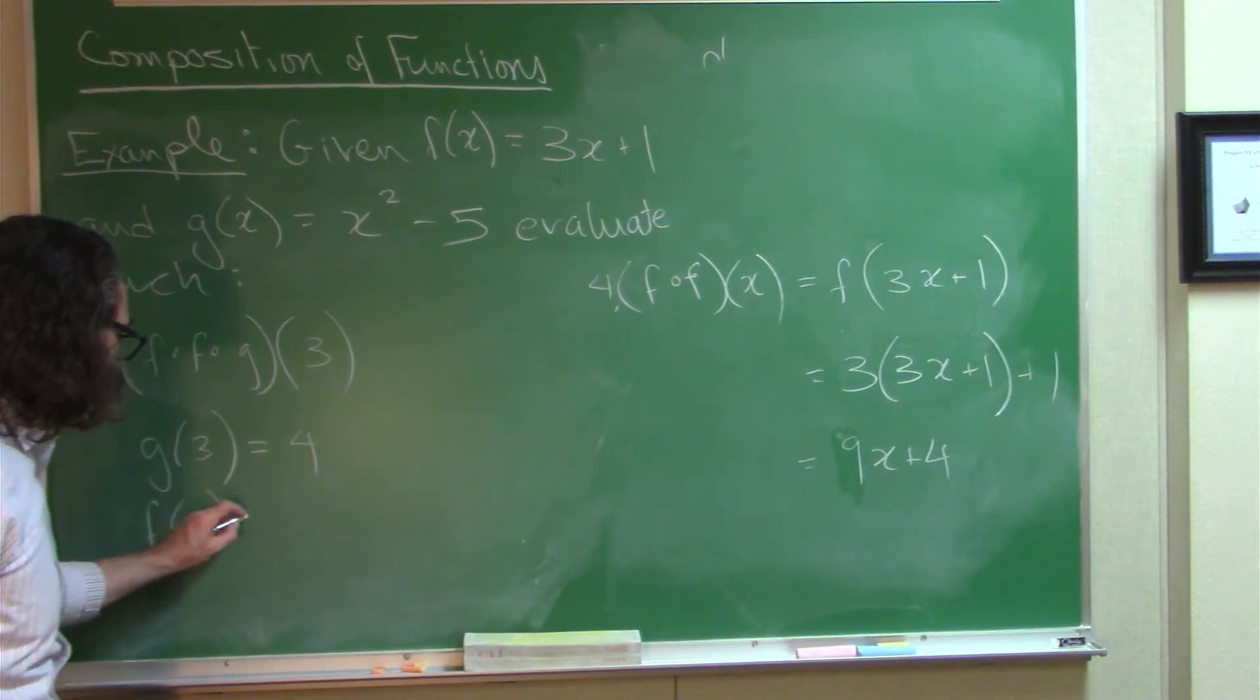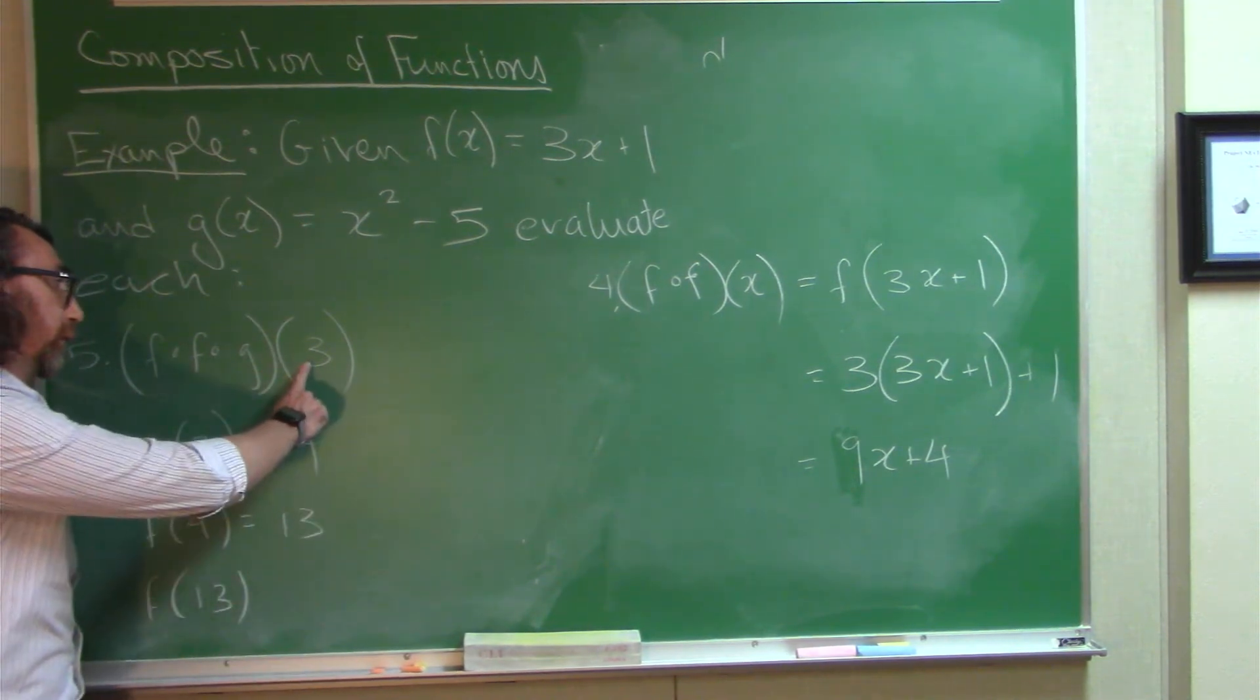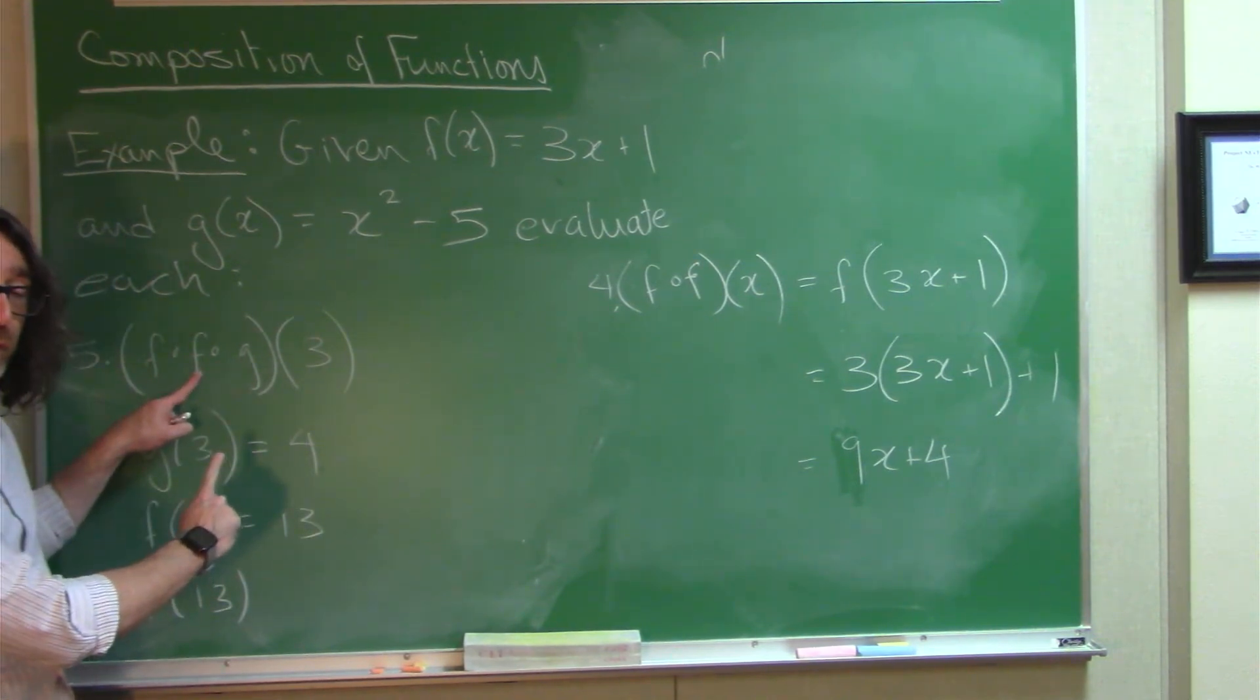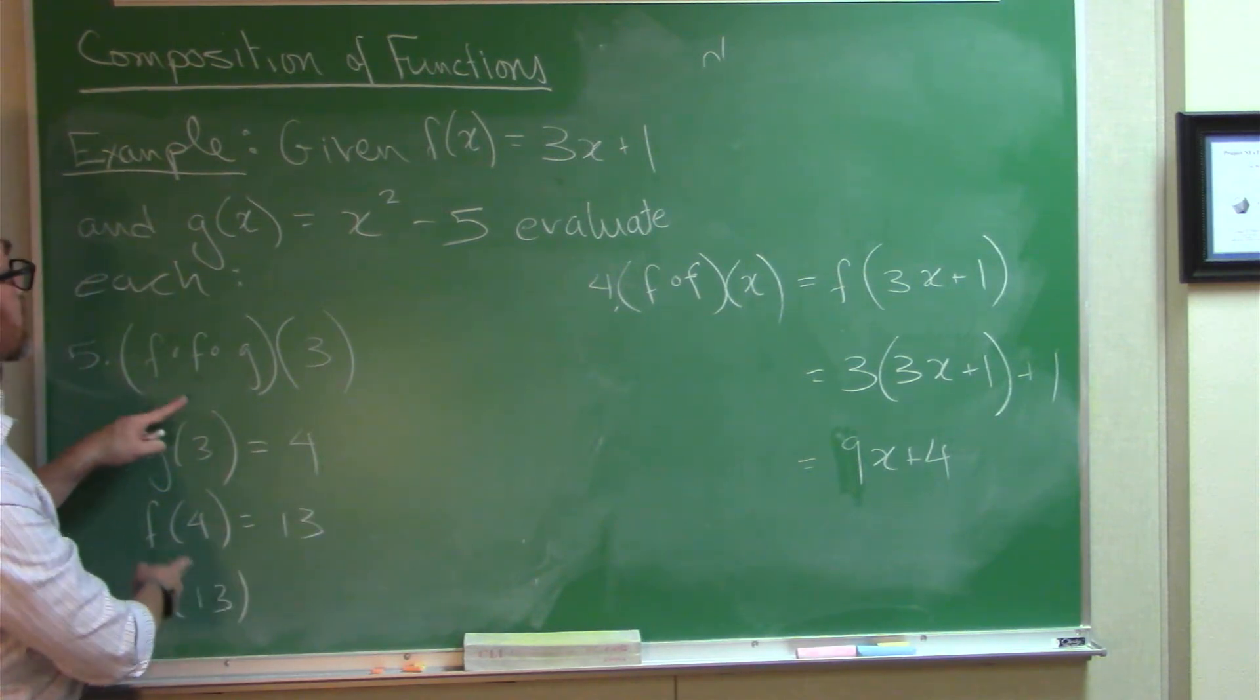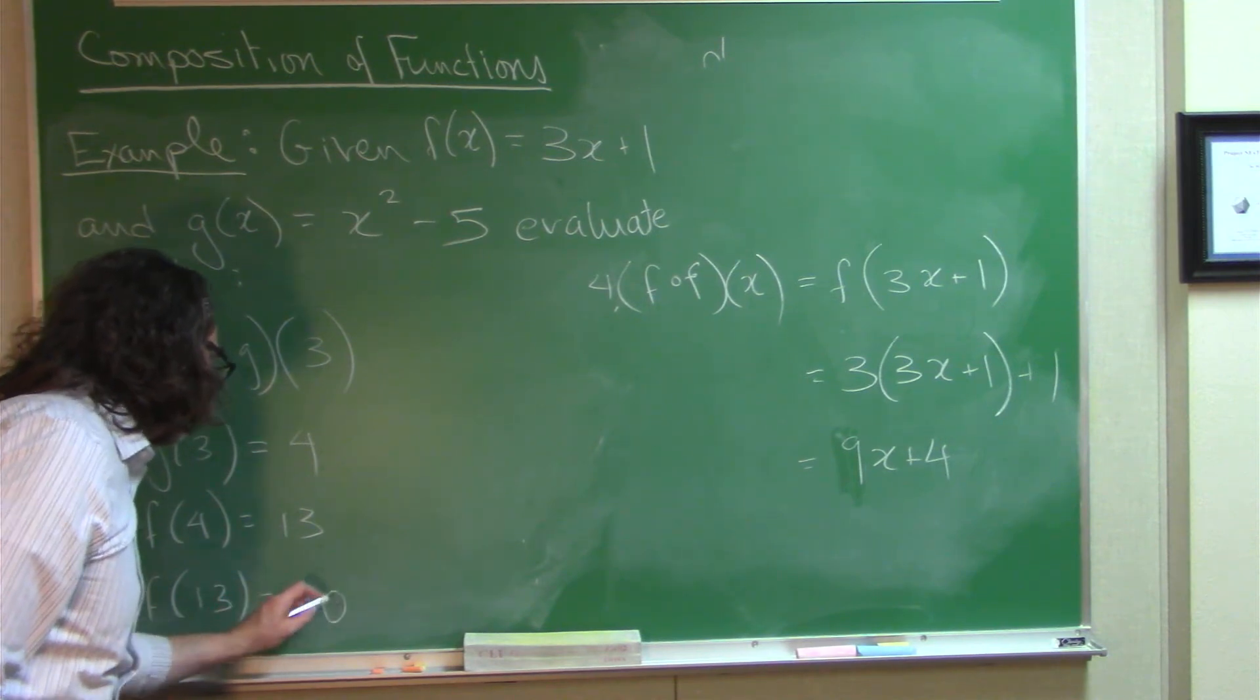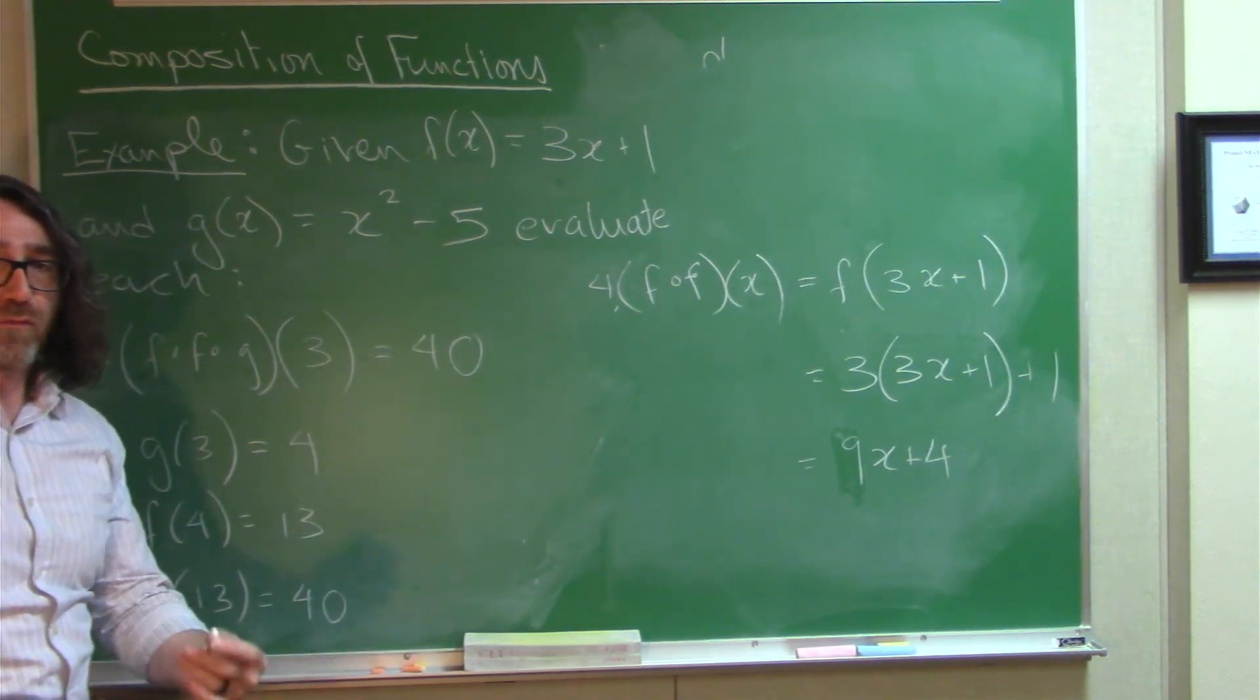Figure out F of 4. 13. Figure out F of 13, right? Notice I'm kind of working my way out here. The 3 goes into G. It gives us 4. The 4 goes into F, which was the next function down the line. It gives us 13. The 13 goes into F, which is the next function down the line. And we get 40, right? Because F multiplies by 3, then adds 1. So the result of all those compositions is 40.